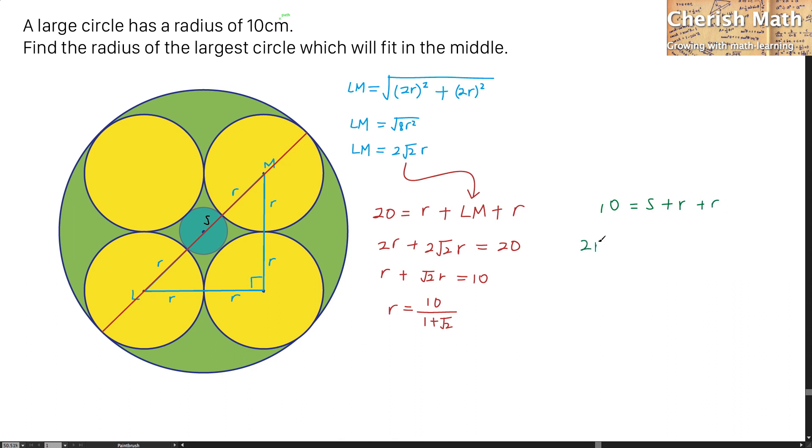Rearrange this, we get 2R plus S equal to 10. Now, S is the same as 10 minus 2R.